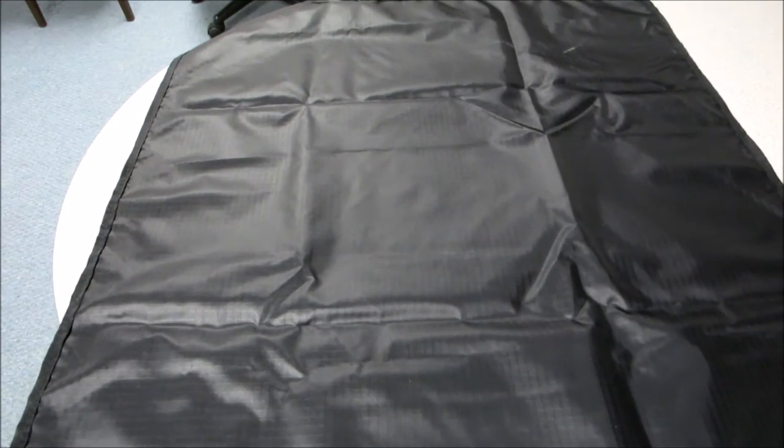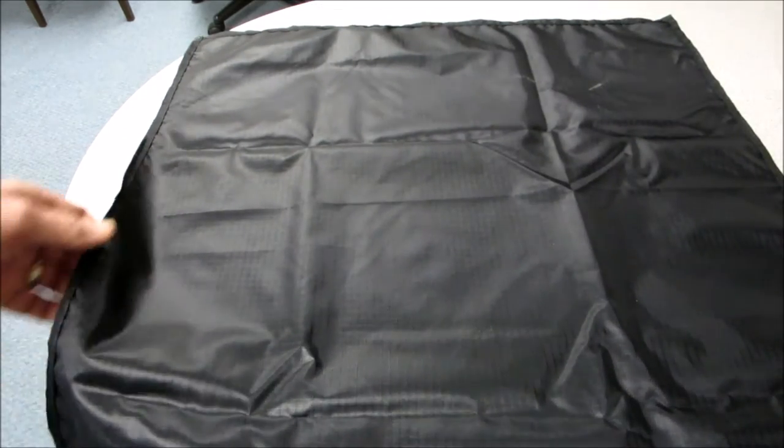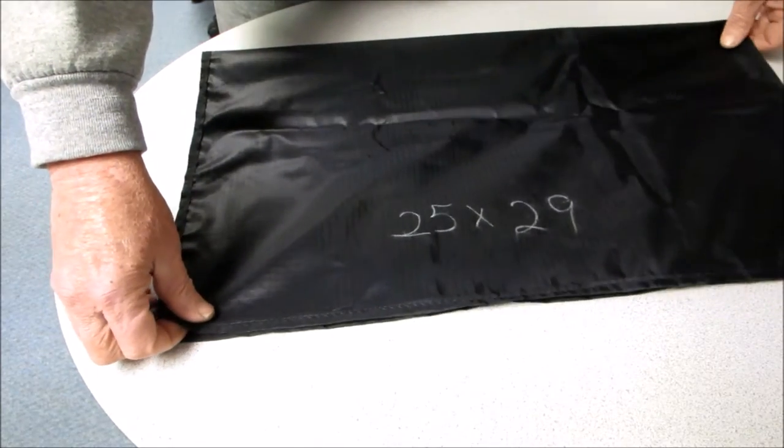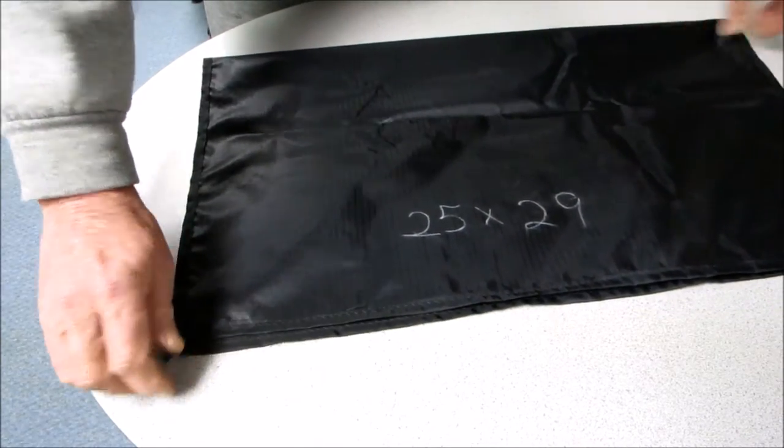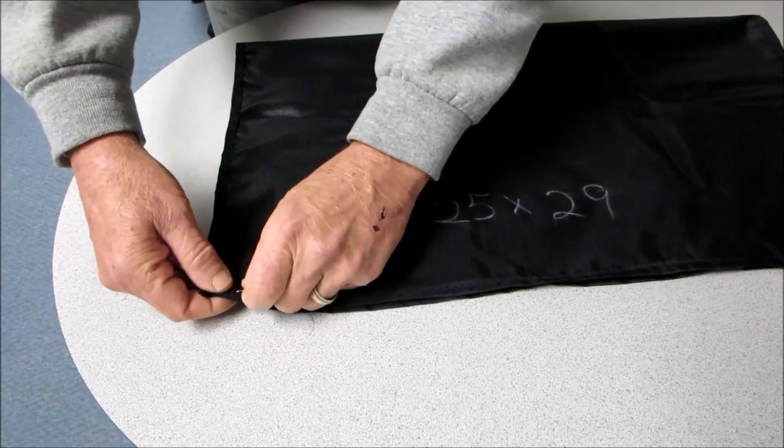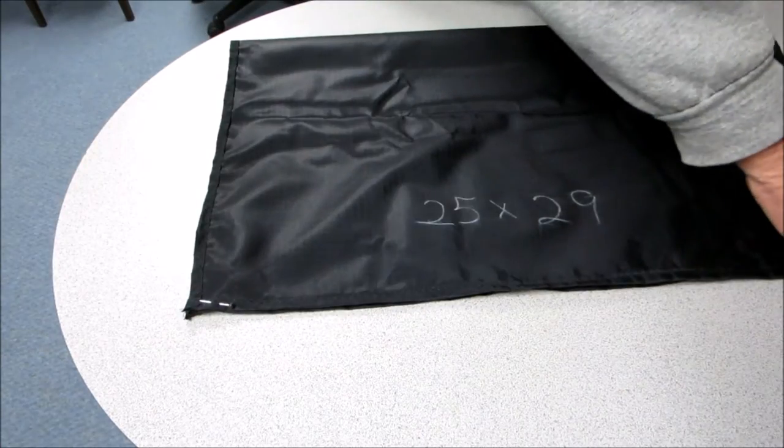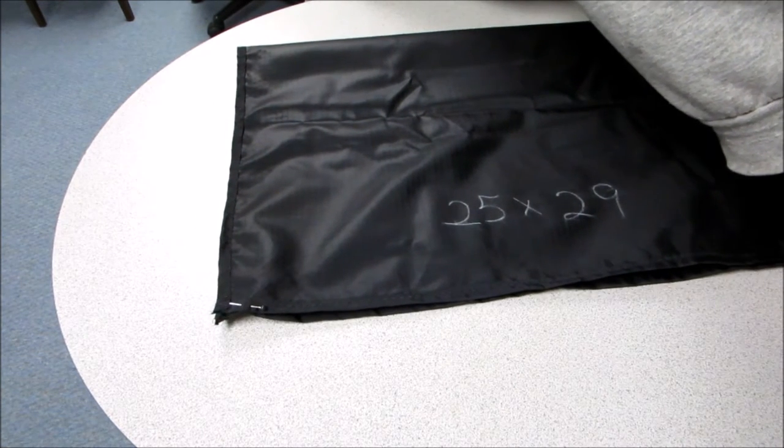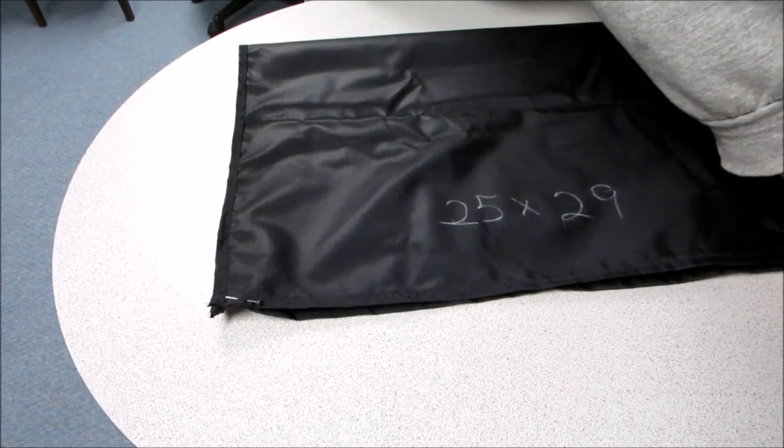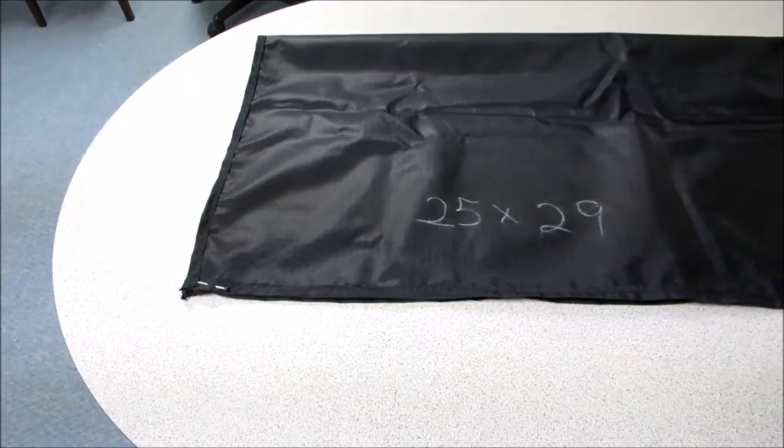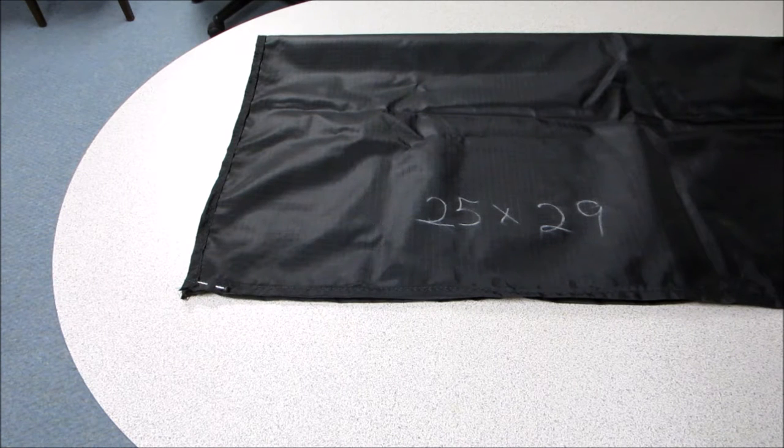Next thing we're going to do is simply fold it in half and probably I'll pin it at the bottom just to make sure I don't lose my position. Double rolled hem to me is the worst part. The rest of it is pretty simple.